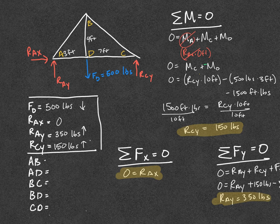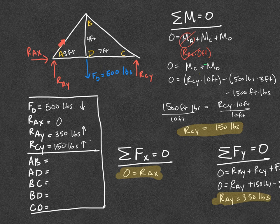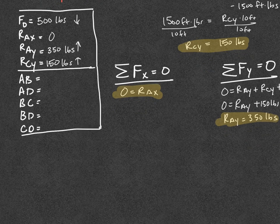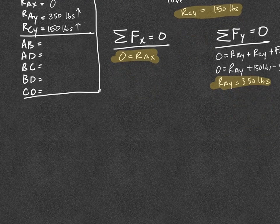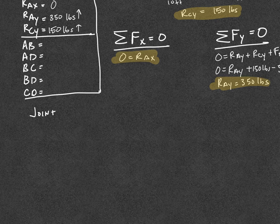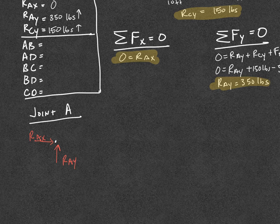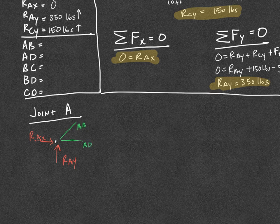I need to pick a starting point with the most knowns and fewest unknowns. I'm going to pick point A because I have two knowns and just two unknowns. I write out joint A and create a free body diagram for that joint, drawing the forces in the appropriate directions. I also draw my member forces and label them, but note that I don't put arrowheads on either one because I don't know which direction they're going — I don't know whether they're in tension or compression yet.